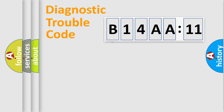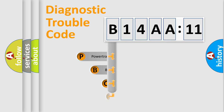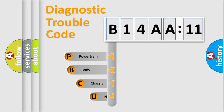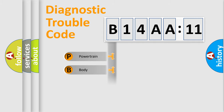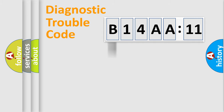First, let's look at the history of diagnostic fault code composition according to the OBD2 protocol, which is unified for all automakers since 2000. We divide the electric system of an automobile into four basic units: Powertrain, Body, Chassis, and Network.